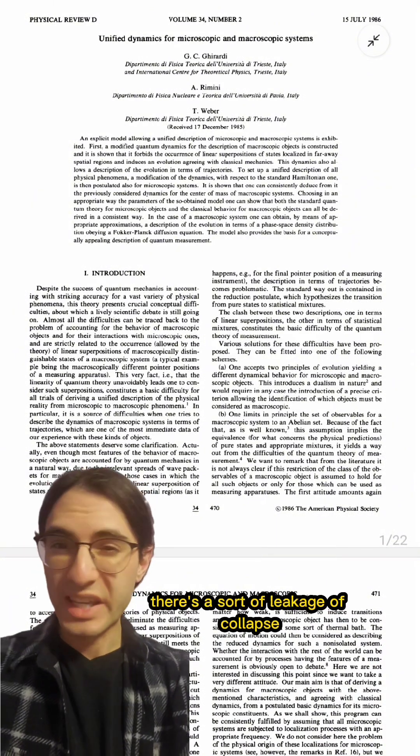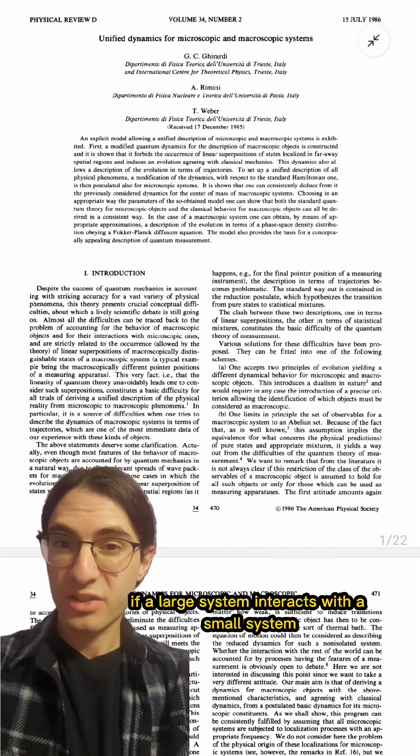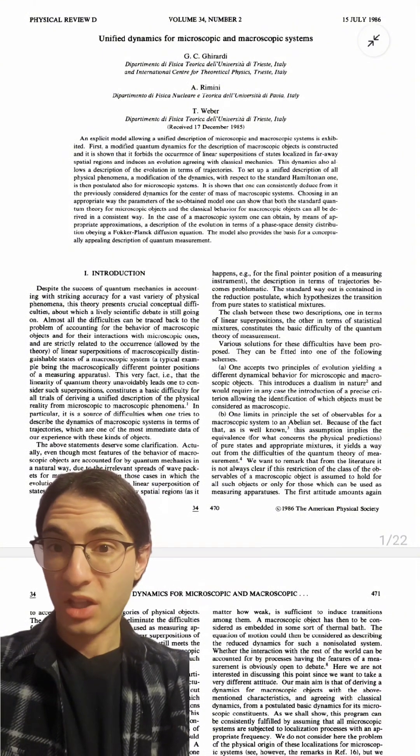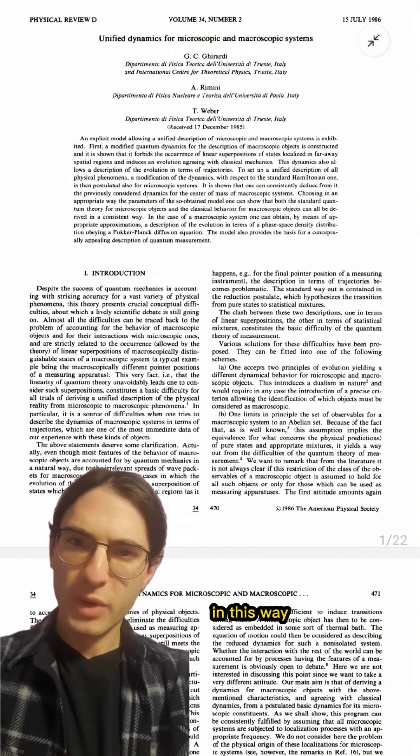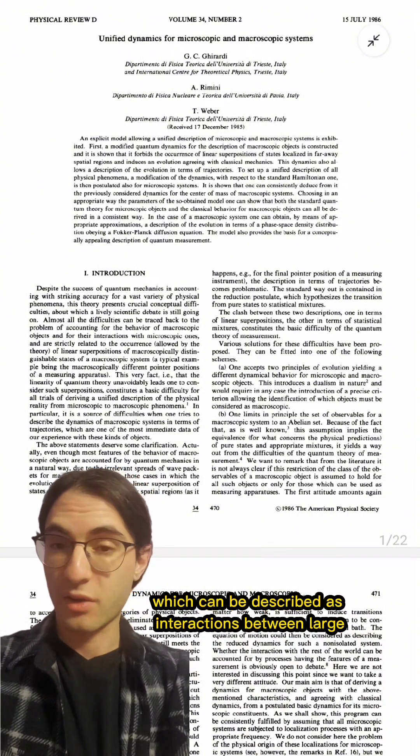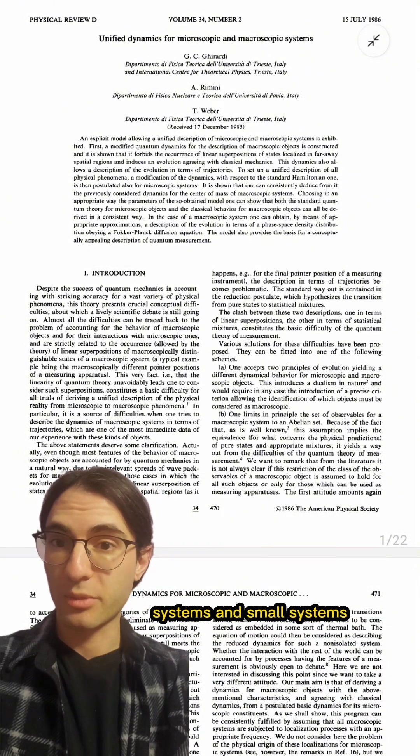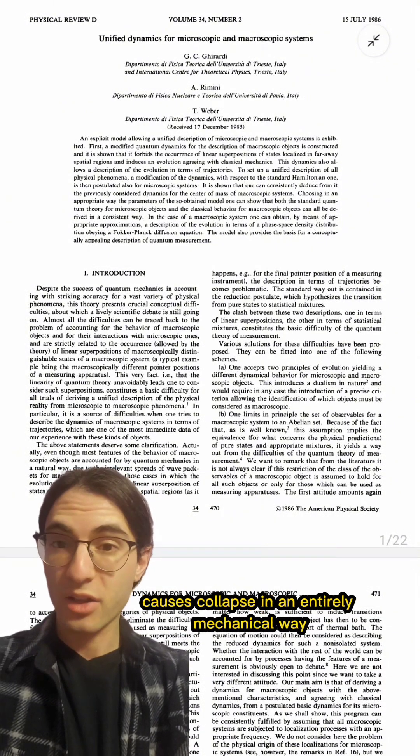Furthermore, there's a sort of leakage of collapse. If a large system interacts with a small system, the collapse of the large system induces collapse in the small system. In this way, measurements, which can be described as interactions between large systems and small systems, causes collapse in an entirely mechanical way.